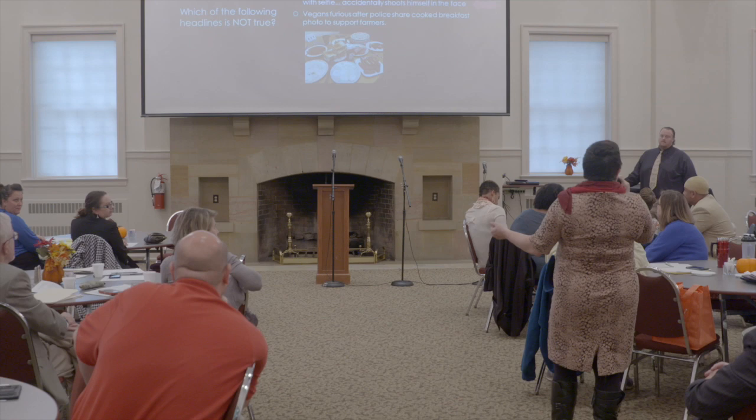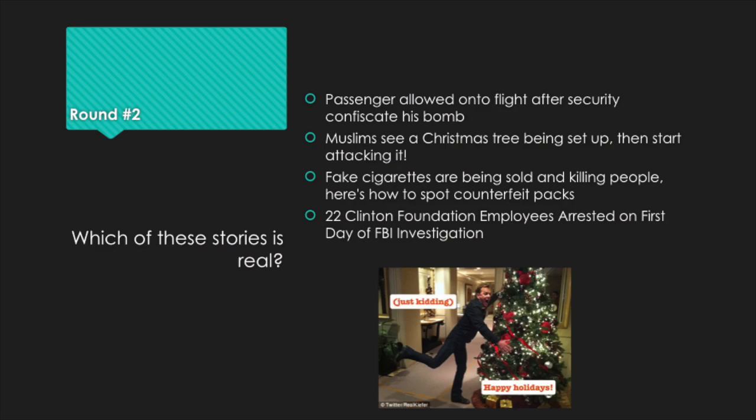Now it's a different challenge — you have to find the actual news story that is factually correct. 'Passenger allowed onto flight after security confiscates his bomb.' 'Muslims see a Christmas tree being set up and then start attacking it.' 'Fake cigarettes are being sold and killing people — here's how to spot counterfeit packs.' And '22 Clinton Foundation employees arrested on the first day of FBI investigation.' Which of those is the factual story?